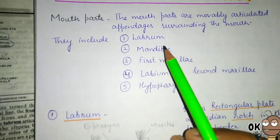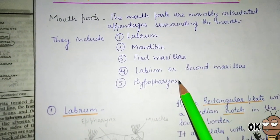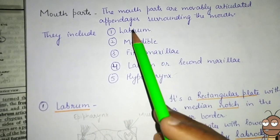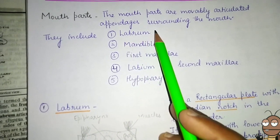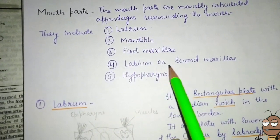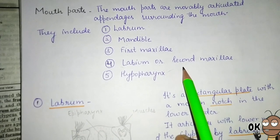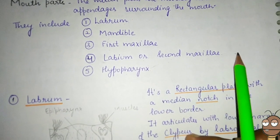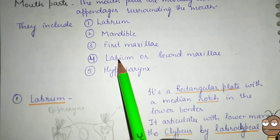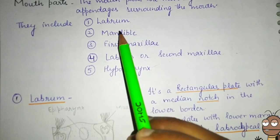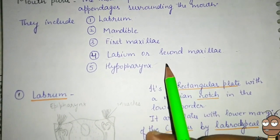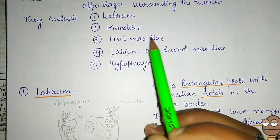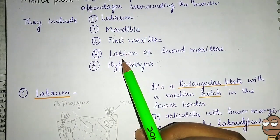Between the upper lip (labrum) and the lower lip (labium, also called the second maxillae), three structures are present: the mandible, first maxillae, and hypopharynx. All these three structures are present between the labrum and the labium.